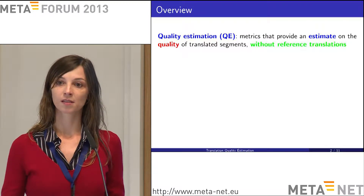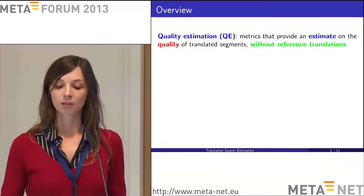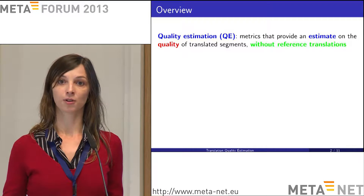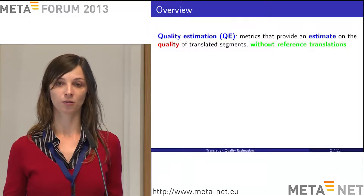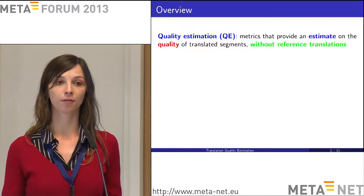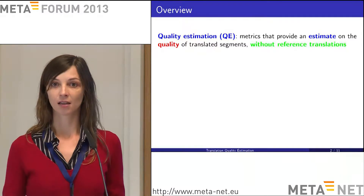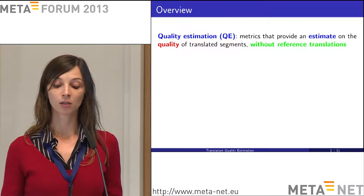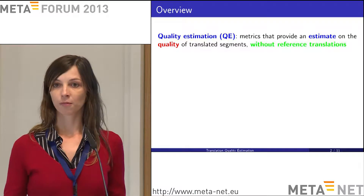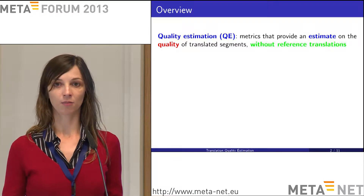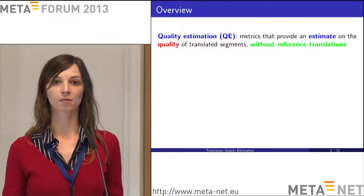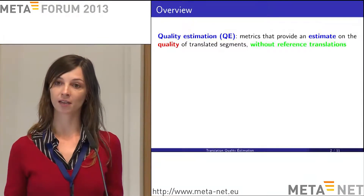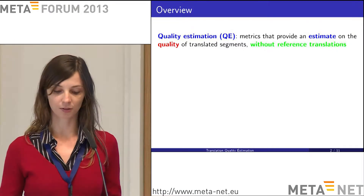Quality estimation metrics attempt to estimate — and I deliberately don't use the word 'measure' — it's a prediction problem. We estimate automatically what the quality of a given translated text would be. This is different from standard evaluation metrics like BLEU or NIST, because we don't have access to reference translations here. We only have the input text and the output text, the translation.